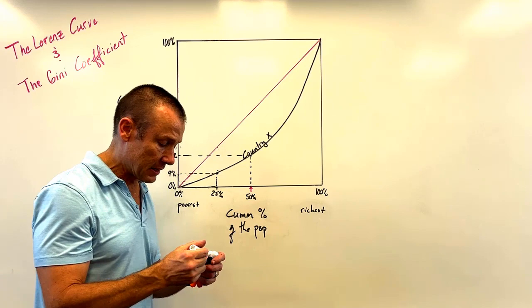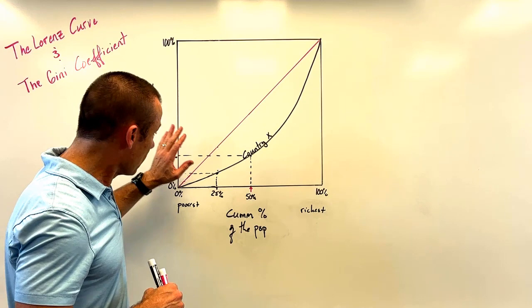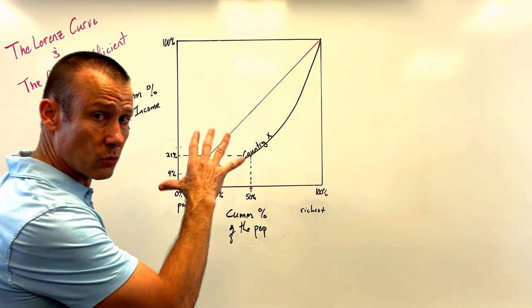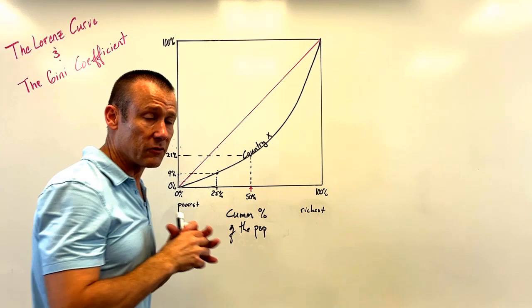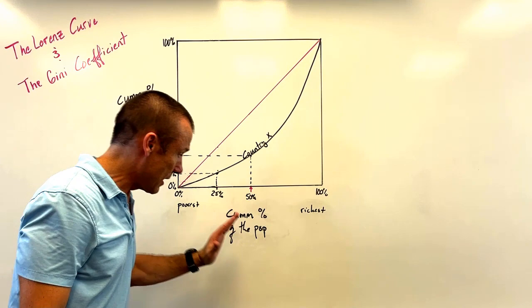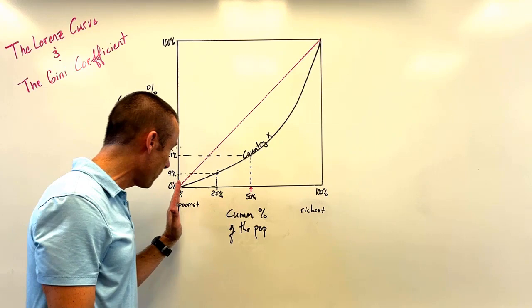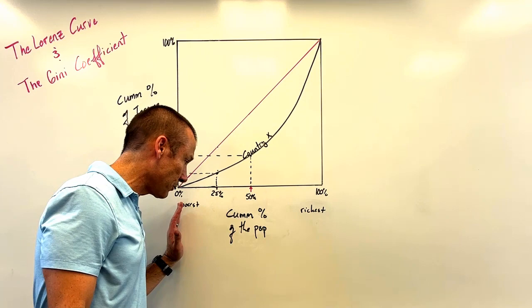A tip for students unsure about which axis gets which variable: just get the visual. Once you picture the reference line and then a bowed-out line below it, it only makes sense that income goes on the vertical axis and population on the horizontal. And remember, on the horizontal axis we're always going from the poorest people in the country to the richest.